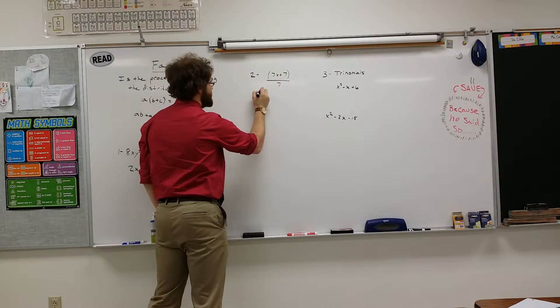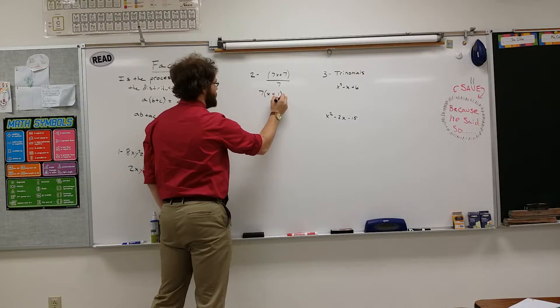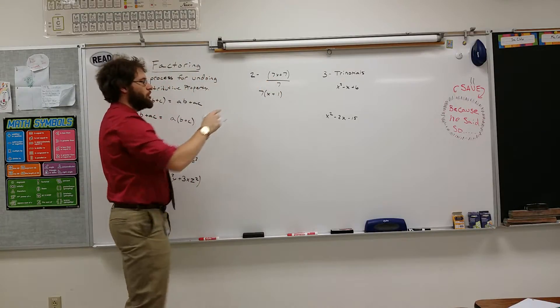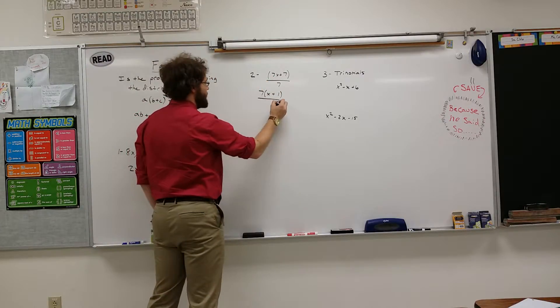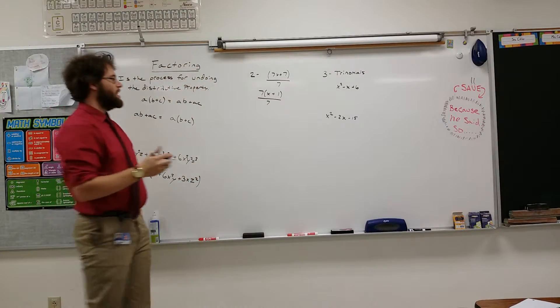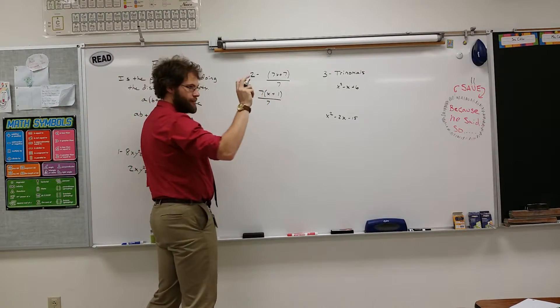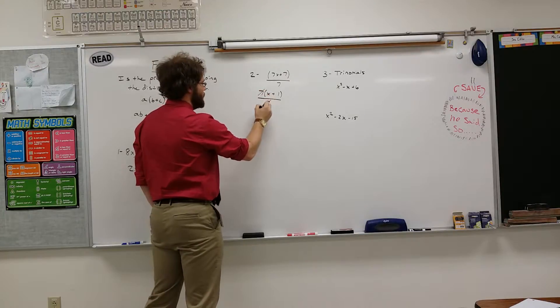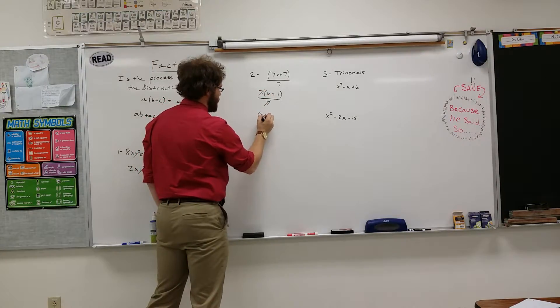So I can take a 7 out of it, just by dividing 7 into each of these terms. And I end up getting 7 times X plus 1 over 7. 7 divided by 7 is 1, so you can cancel it out like this, and you're left with X plus 1.